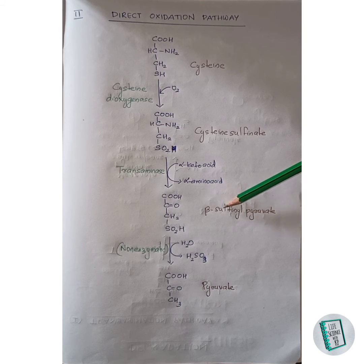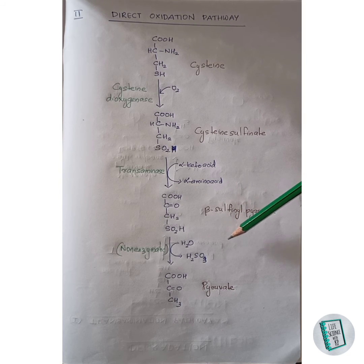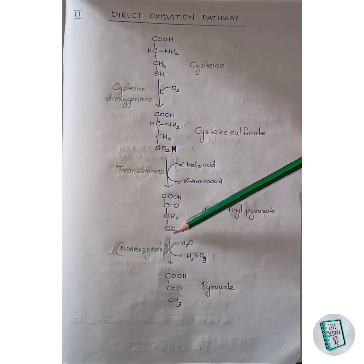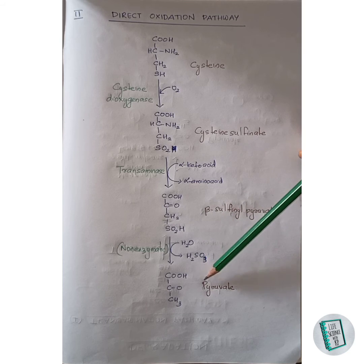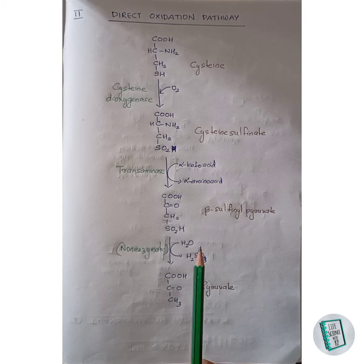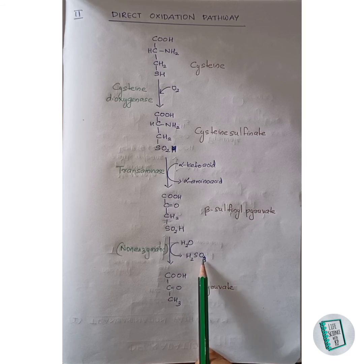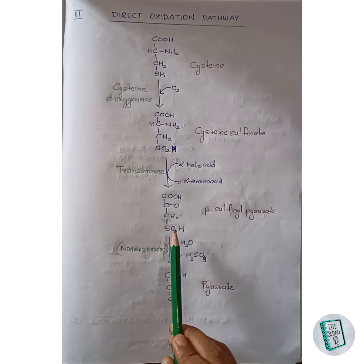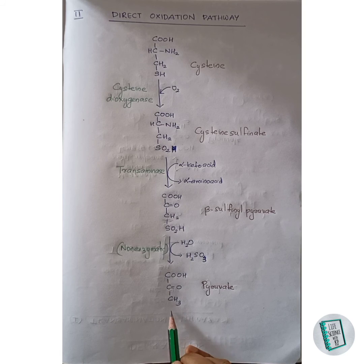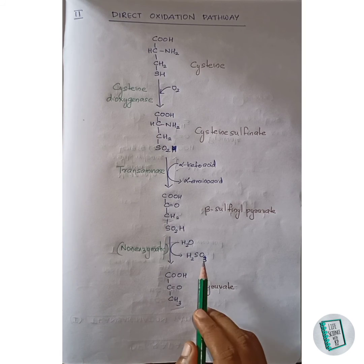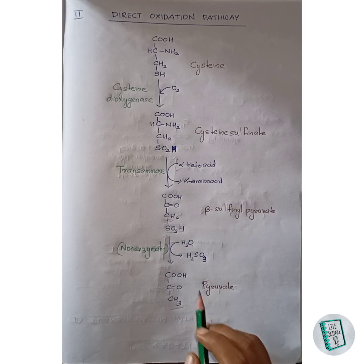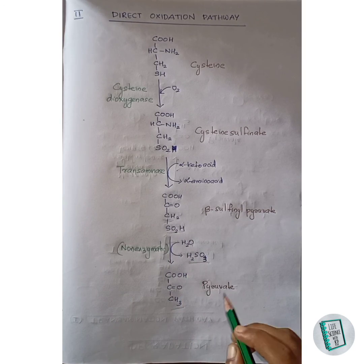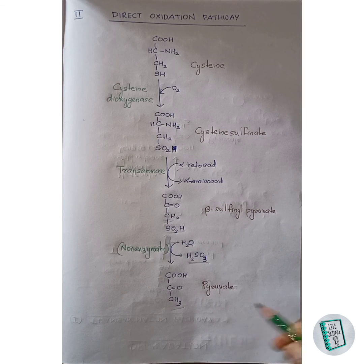The beta-sulfonyl pyruvate formed then undergoes a non-enzymatic reaction where a water molecule splits the compound into a pyruvate molecule and H₂SO₃. One hydrogen of the water molecule attaches with the CH₂ and forms CH₃, and the remaining OH group of the water molecule attaches with the SO₂H group and leaves as H₂SO₃, thus forming pyruvate.